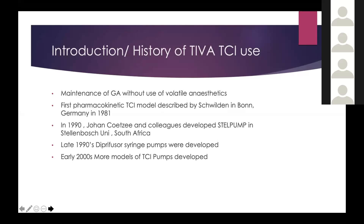Briefly, the default anesthetic technique most people use, myself included, is a balanced anesthetic, which includes use of a volatile plus or minus regional anesthetic. But TIVA use is slowly picking up and it's been around for maybe the last 20 or so years. A brief history: the first TCI model was described by Schwellen in Bonn, Germany in 1981. But it's not until 1990 that, down in South Africa, colleagues developed a spell pump — an MS-DOS platform pump used to deliver anesthetics. That was total intravenous anesthesia.